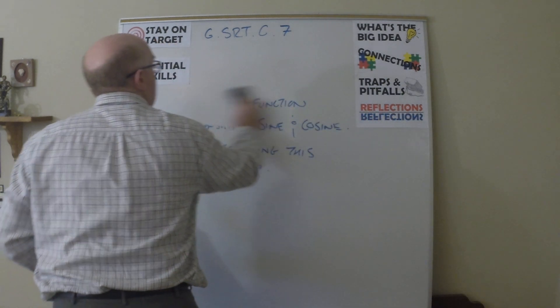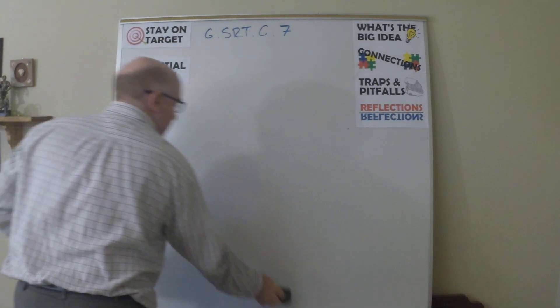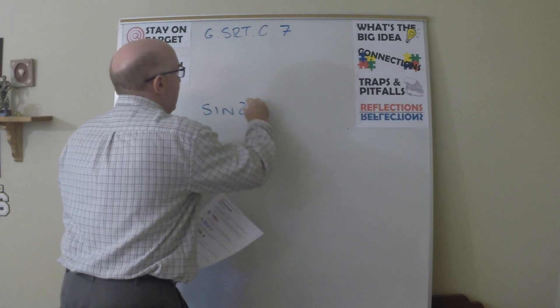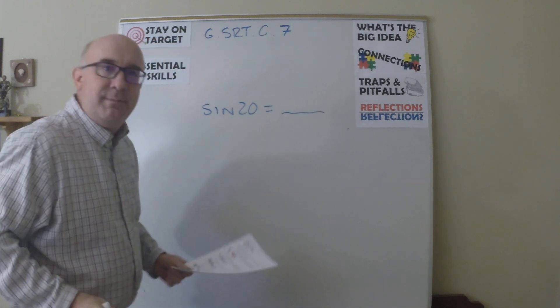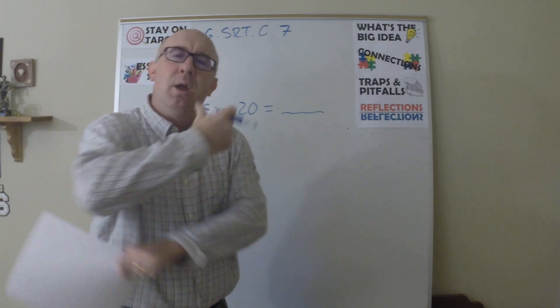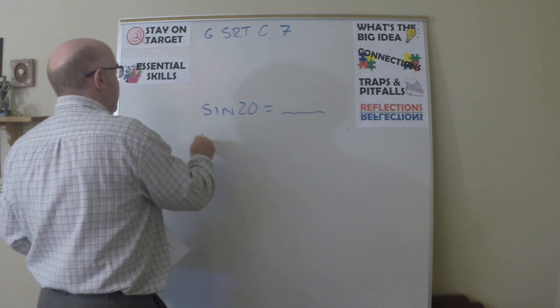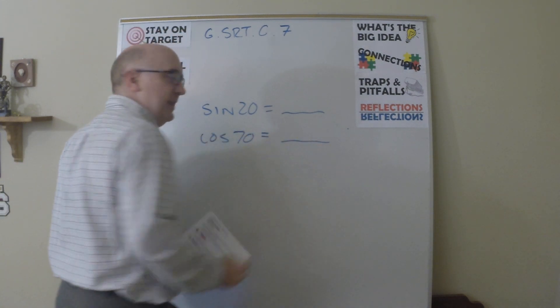What I do with them is I take that table and say, can you look up the sine of 20 for me? They go to that table and find some number. Then I say, where is that same number elsewhere? Sure enough, they say it's over here at 70.